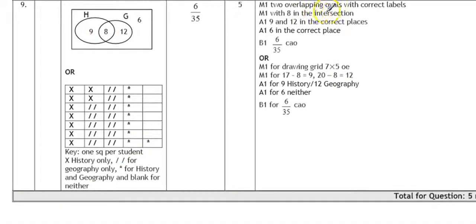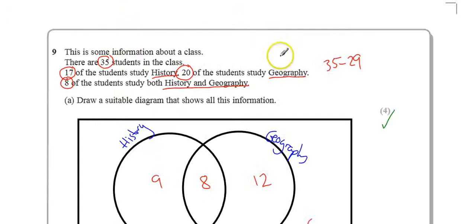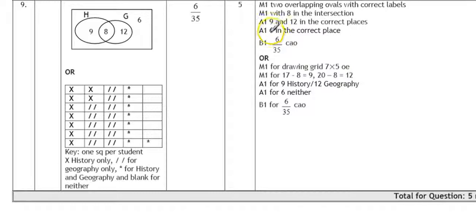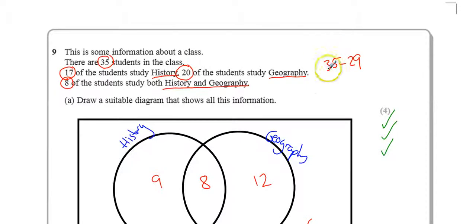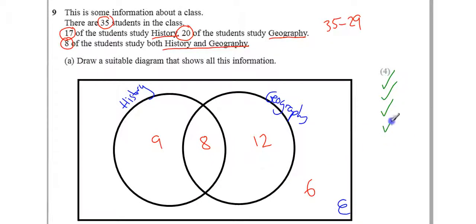Eight in the intersection, and then nine and twelve in the correct places. Eight in the intersection is worth one. Nine and twelve. And then let's look at the final mark. And then it says six in the correct place. So, six in the correct place. Where have we got our six? Yeah, just down here. And that's our fourth mark.